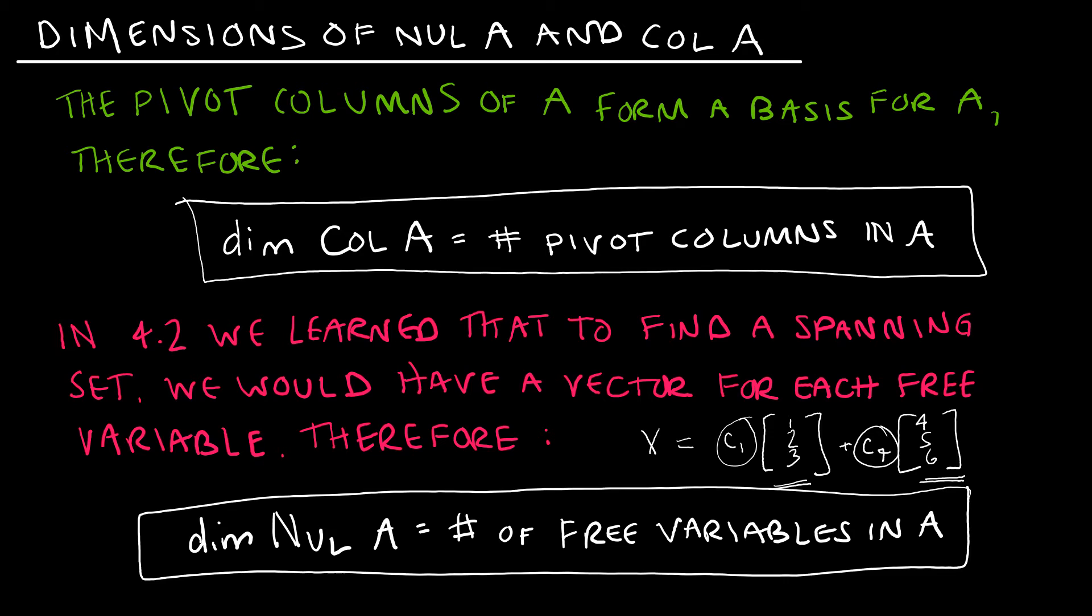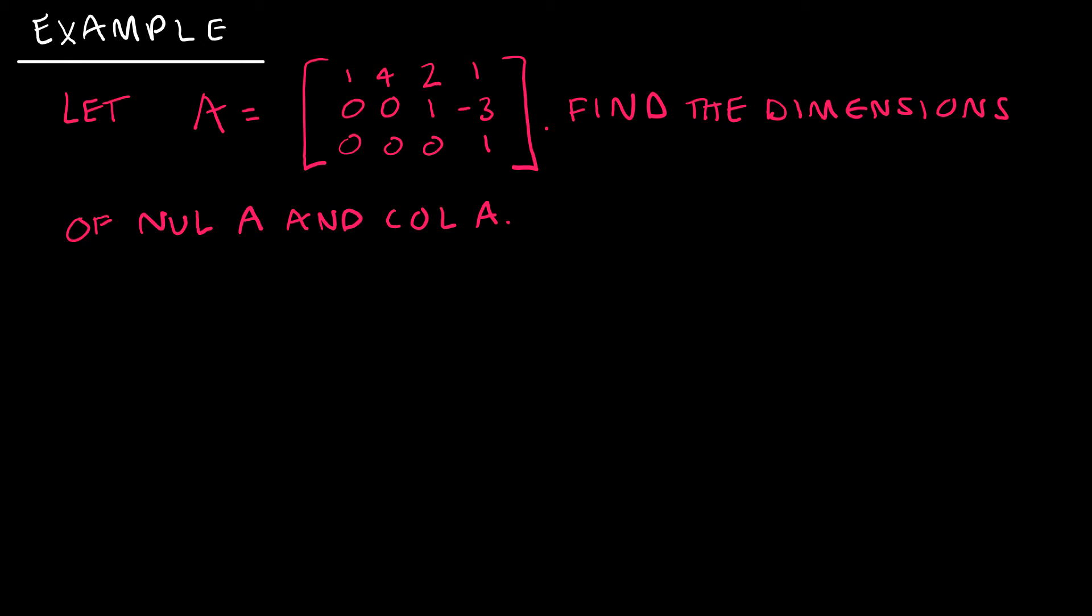So there's what we know. Let's take a look at an example. Let's let A be this matrix that I have written out for you. I want you to find the dimensions of the null space of A and the column space of A. I already have here a pivot and a pivot and a pivot. I gave you one that was already row reduced just to make things go a little faster.